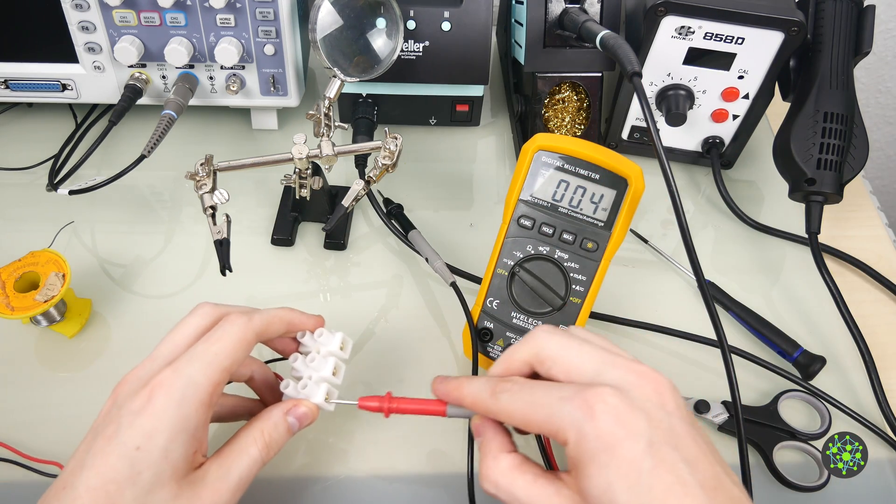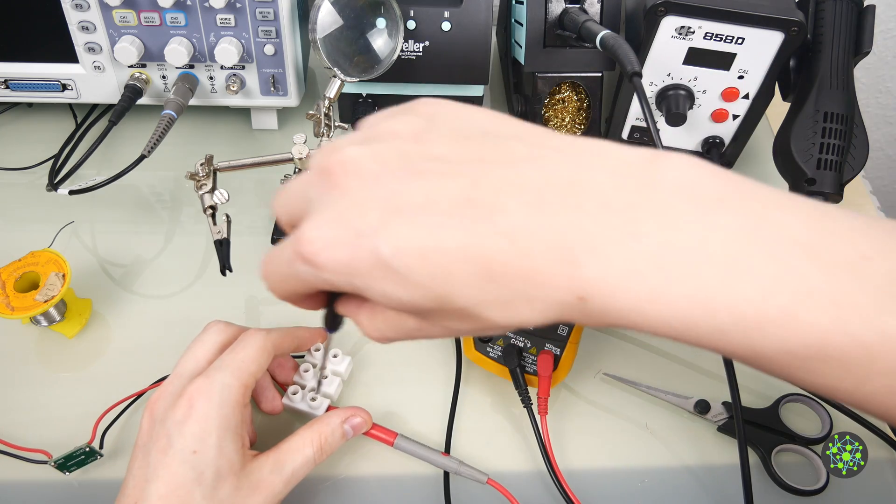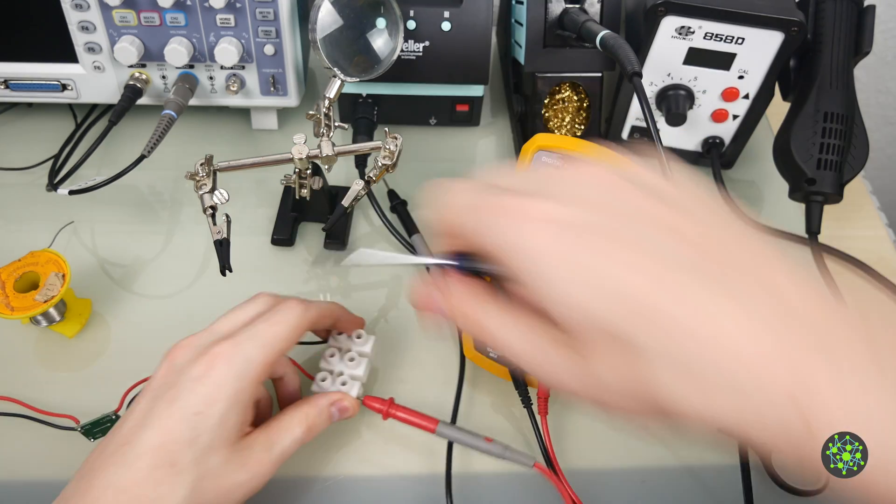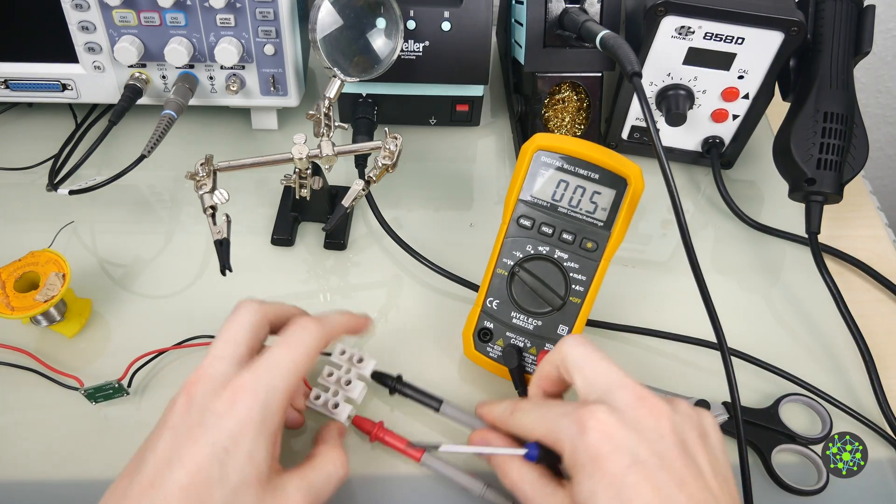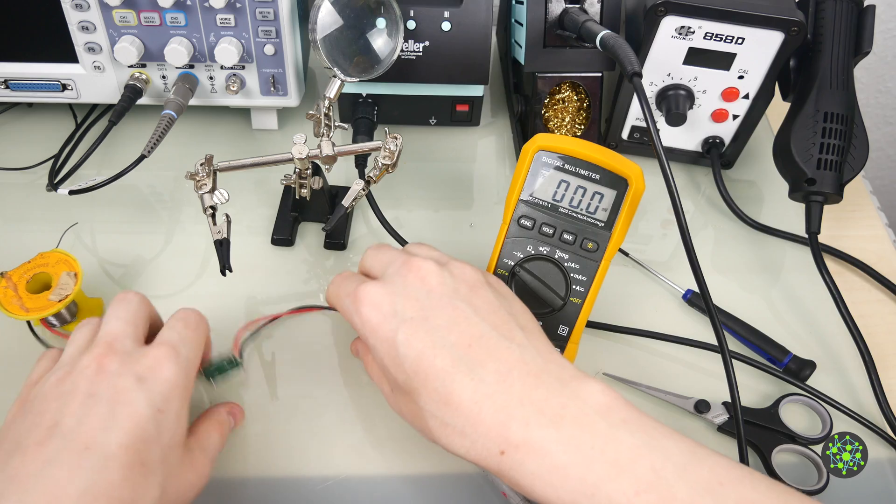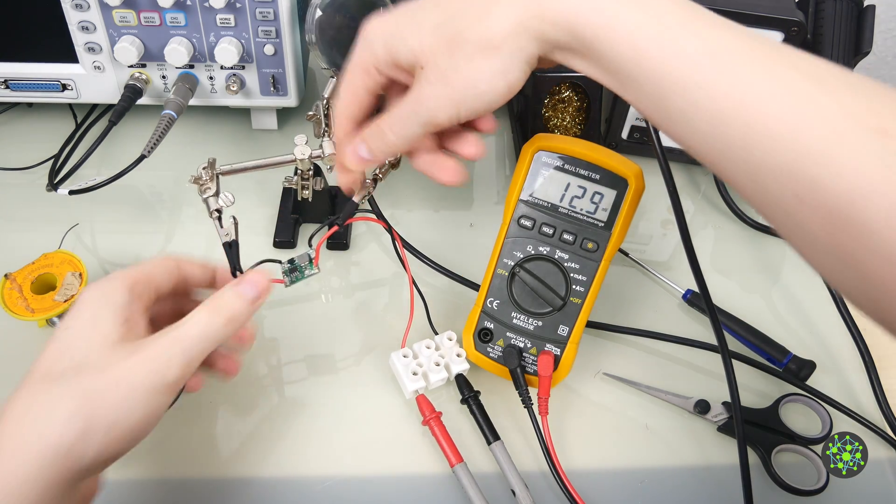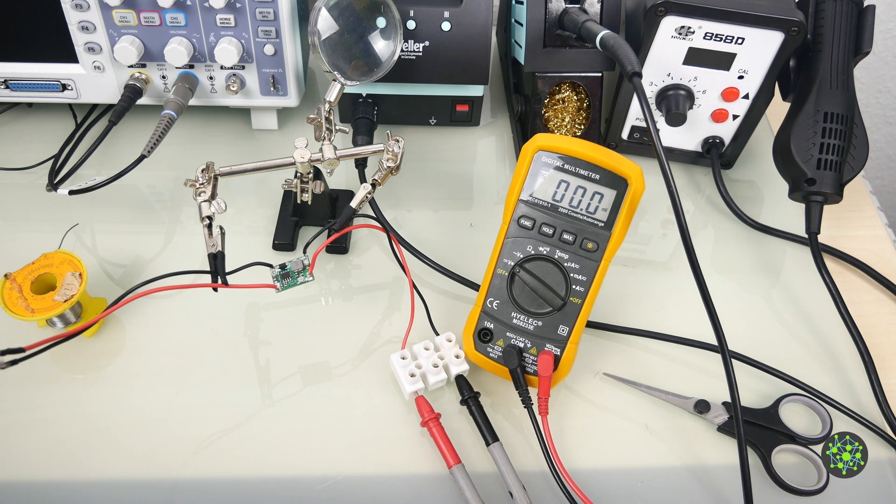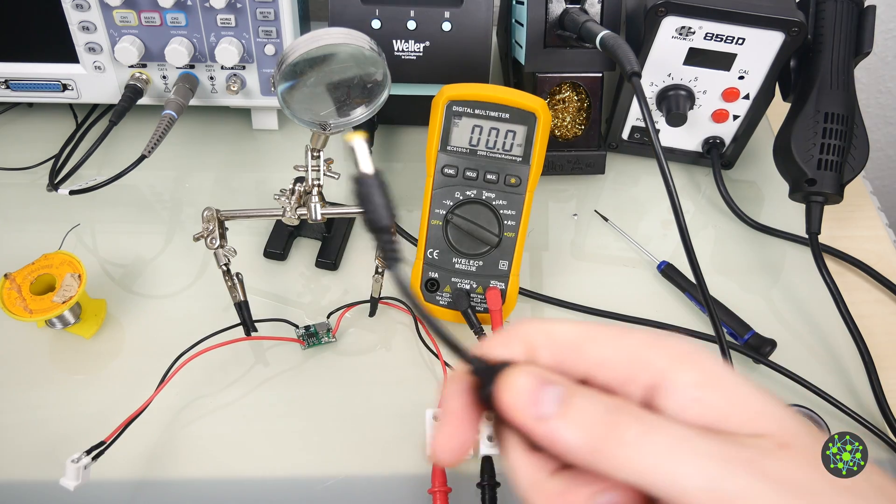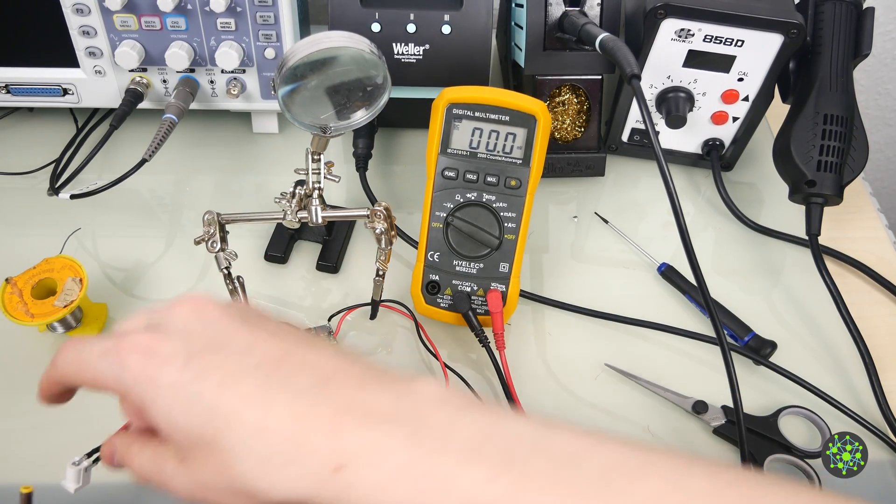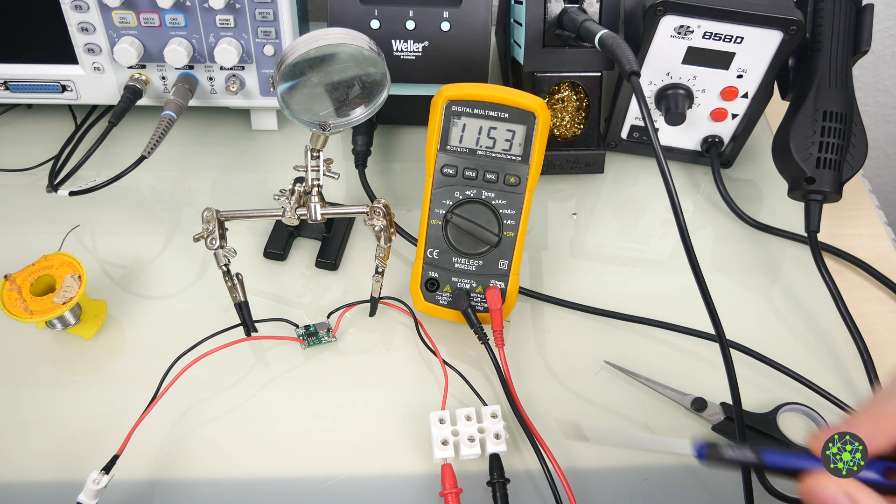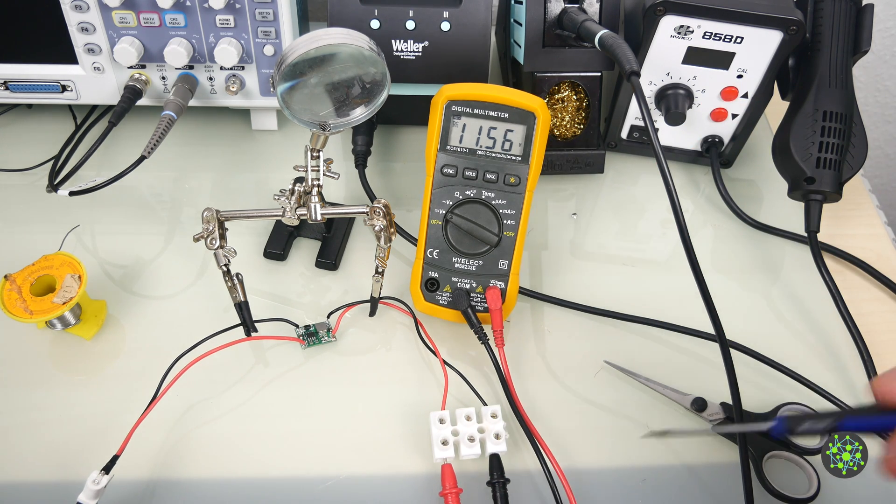Now we can use our probes and screw them in on the other side so I don't have to handle those all the time. Now let's hold that in place and I will get a fitting screwdriver so we can adjust the voltage. Over here I've got my 12 volts. Let's hope nothing blows up. You can see we are getting a voltage of 11.5 volts. I guess 5.17 volts is close enough.